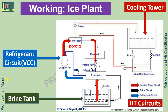The expansion valve reduces the refrigerant's pressure and temperature drastically to a negative temperature, and then it is passed to the evaporator. Water in the cooling water circuit gets warm by receiving condenser heat, and then it is passed to the cooling tower, where it is cooled by rejecting heat to the atmospheric air.